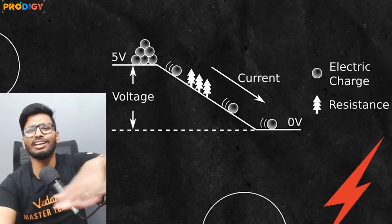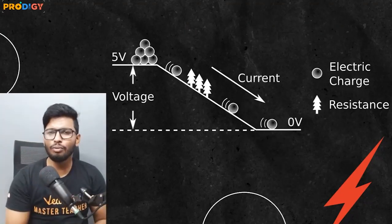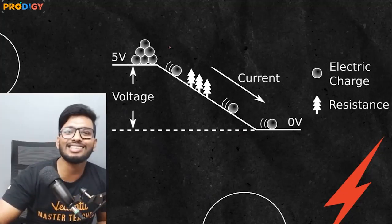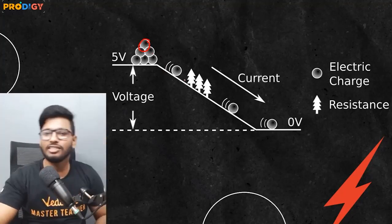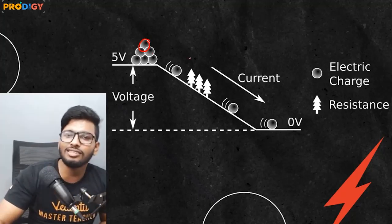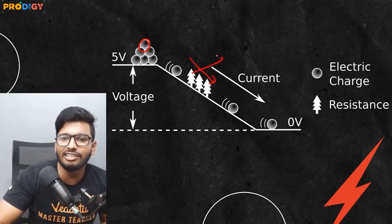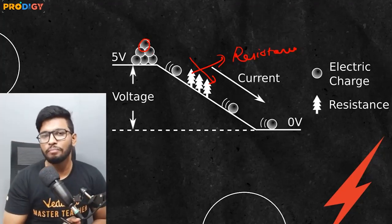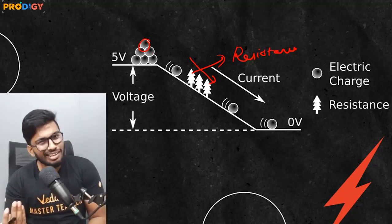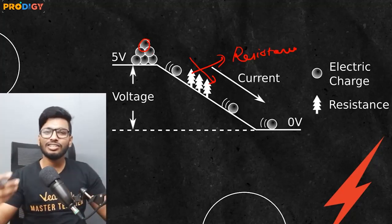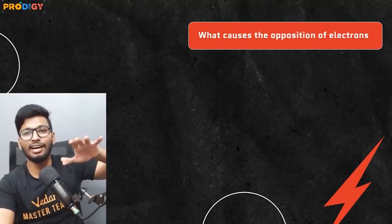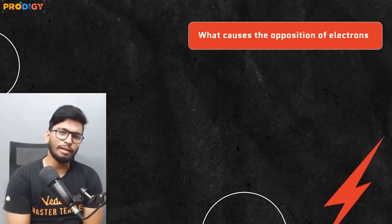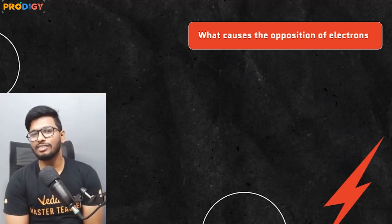These are different analogies you can use — notes will be available for download. Imagine balls rolling downhill due to potential difference — those balls represent charges. The trees in their path represent resistance; because of those trees the balls slow down. That's resistance: it offers restriction to the flow of current. You can also think of a car on a road full of speed bumps — no matter how fast you want to go, those bumps slow you down.